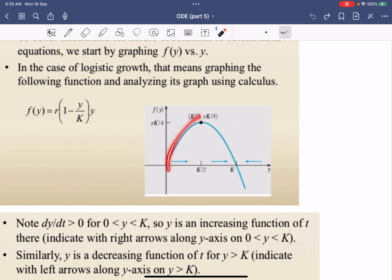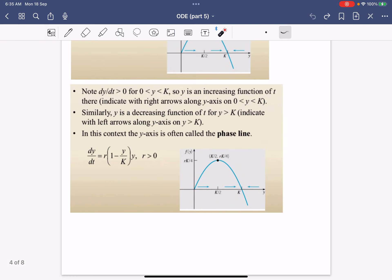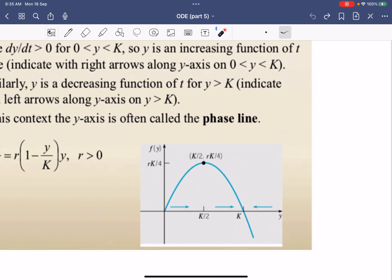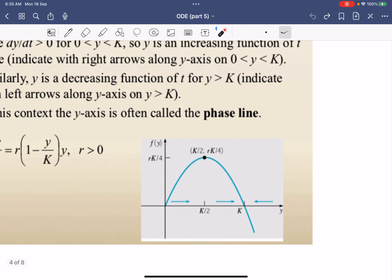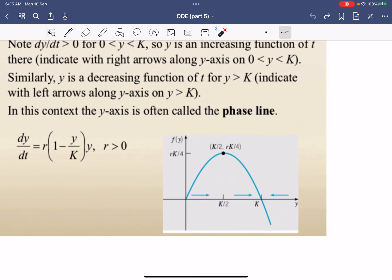You're able to now draw what is known as a phase line, which is just the behavior of the graph. You see everything here is positive rate of change because f(y) is positive.